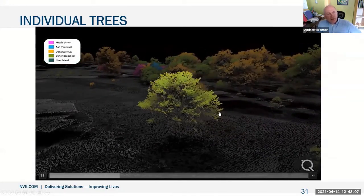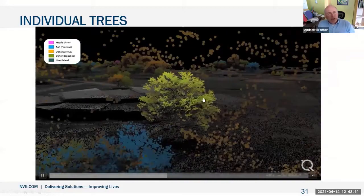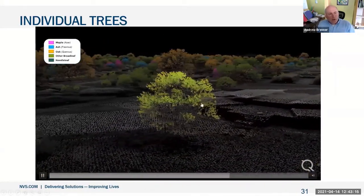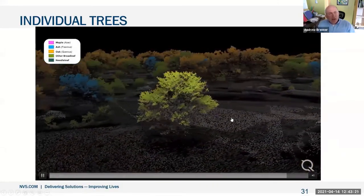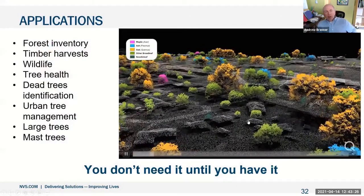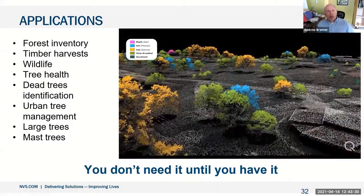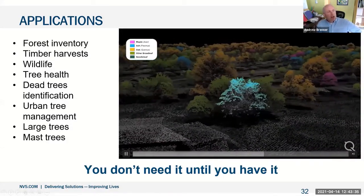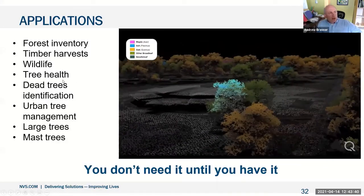Zooming in on an individual tree, you can see the level of information associated with it. If this tree has a certain amount of dead material, we can identify that and bring it into our analysis system. So we can look at urban tree death, disease, and invasive species. To wrap up, the applications include forest inventory, timber harvest, wildlife, tree health, dead trees, and urban tree management.